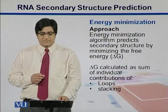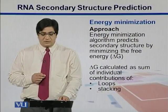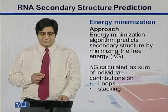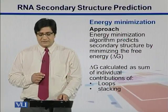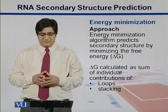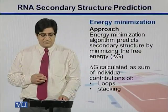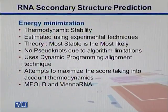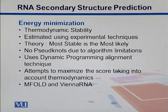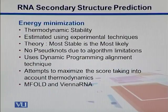This approach neglects pseudoknots. It predicts secondary structures by minimizing the free energy. We can calculate delta G as the sum of individual contributions of loops as well as stacks. Overall, this algorithm is thermodynamically stable — it looks for thermodynamic stability and estimates energy using some experimental techniques to come up with a thermodynamically stable structure.